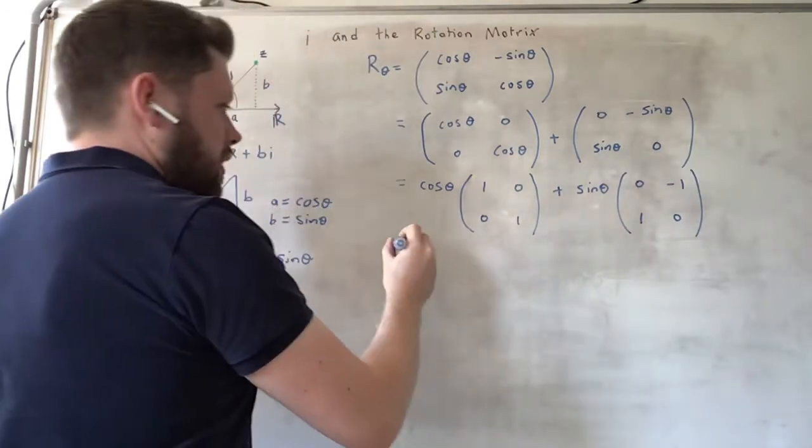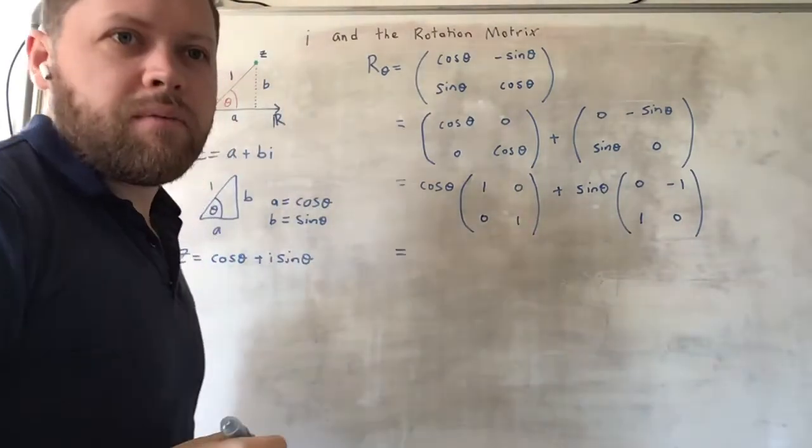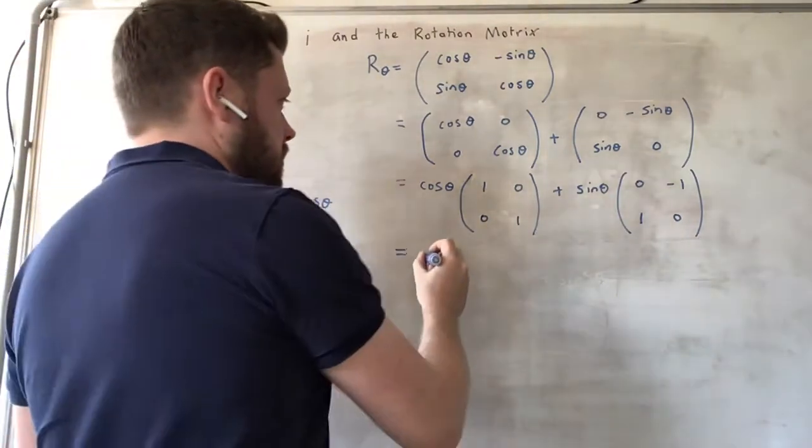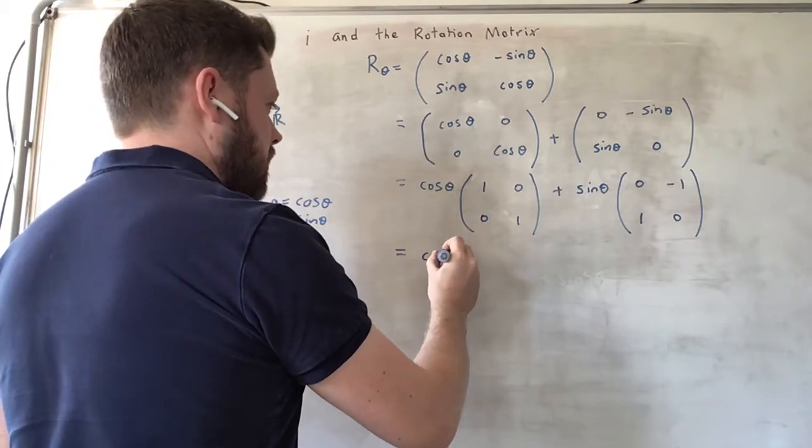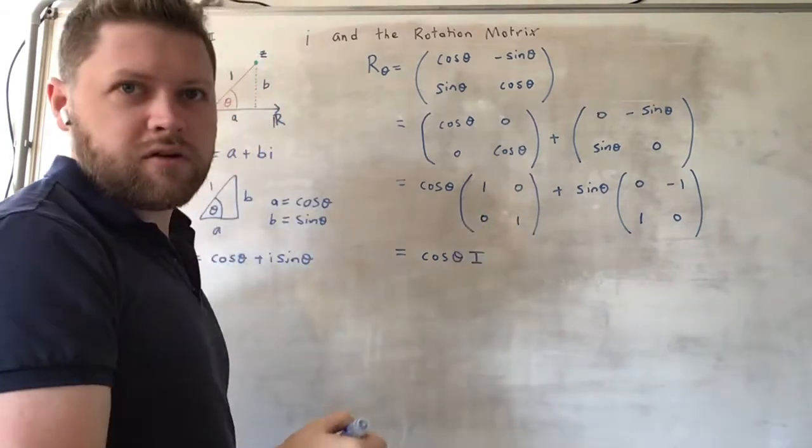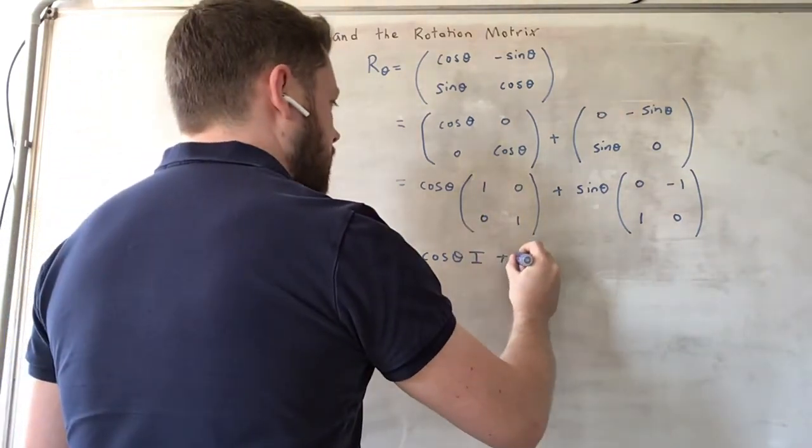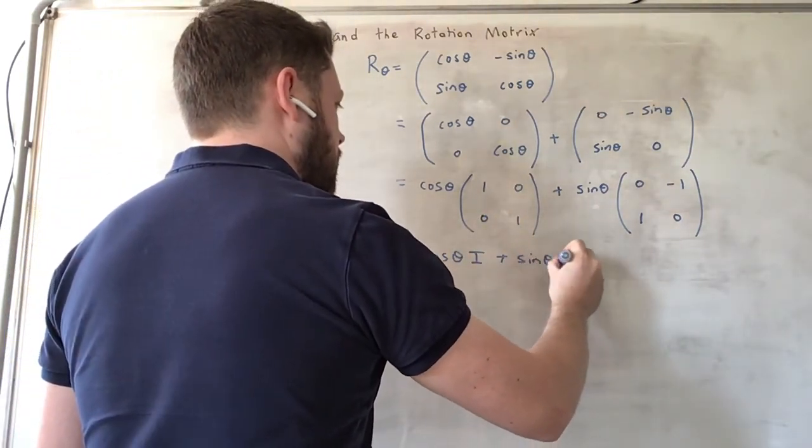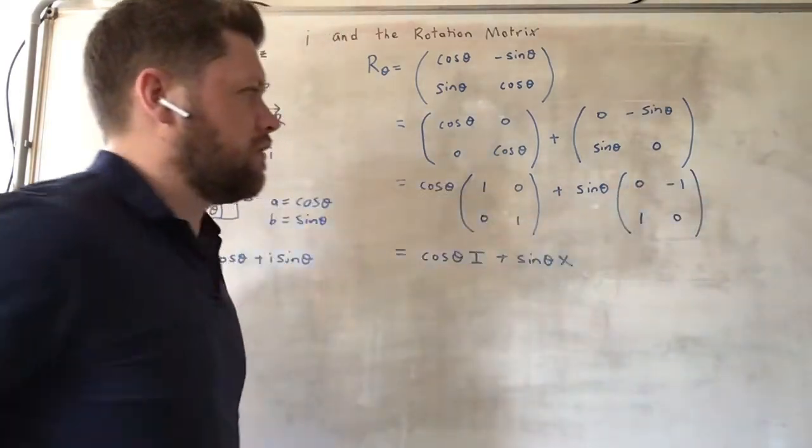So we can rewrite this in terms of a matrix equation, which we might style cosine theta times I. This is the identity matrix. Plus sine theta X, where X is this matrix here.